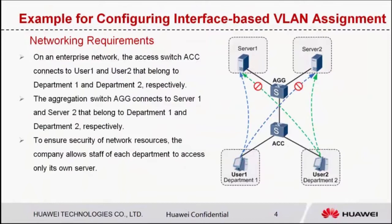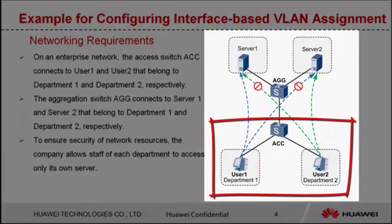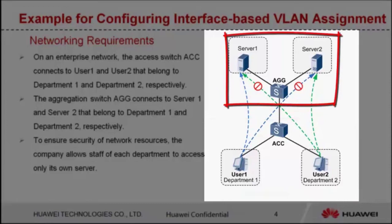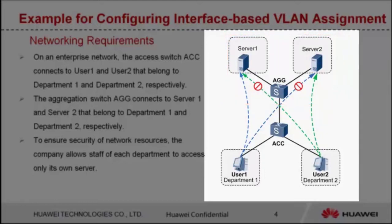Now let's move to the configuration of interface-based VLAN assignment. On an enterprise network, the access switch ACC connects to user 1 and user 2, which belong to department 1 and department 2 respectively. The aggregation switch AGG connects to server 1 and server 2, which belong to department 1 and department 2 respectively. To ensure network security, the company allows staff of each department to access only its own server.